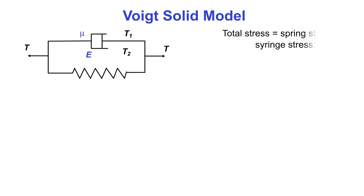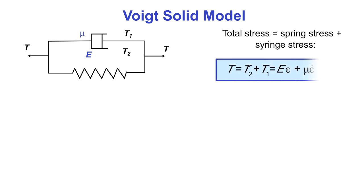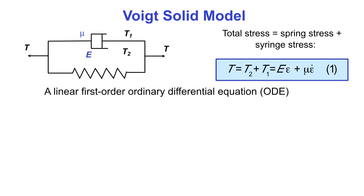In the Voigt solid, stresses add. The total stress T equals the stress in the spring T2 plus the stress in the dashpot T1. The stress in the spring is E times the strain, and the stress in the dashpot is mu times the strain rate epsilon dot. The strain in both elements is the same because they're in parallel. Again, we have a linear first-order ODE relating stress to strain and strain rate.